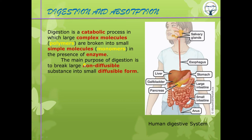The purpose of digestion is to break large non-diffusible substances into small diffusible form. Non-diffusible substances cannot pass the intestinal lining or diffuse into the blood. Digestion breaks them into small diffusible molecules so our blood can transport them to every part of the body to meet requirements.